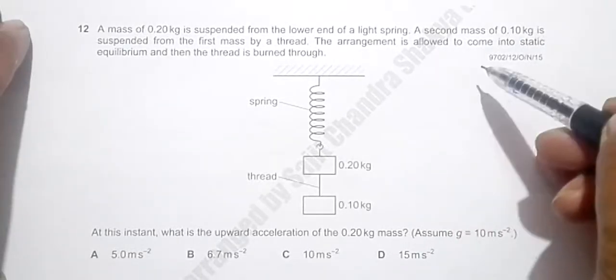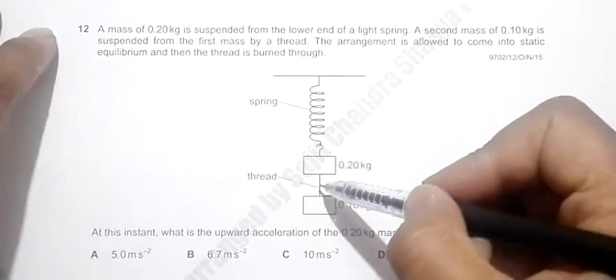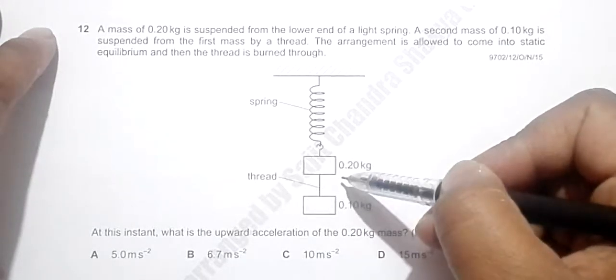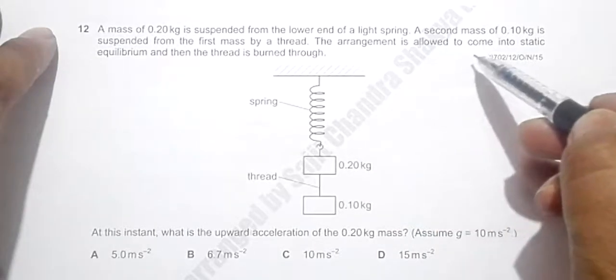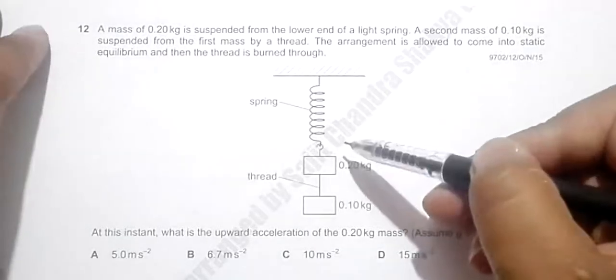So these two masses will be acting to extend the spring. The arrangement is allowed to come into static equilibrium, so it first oscillates a bit, then we allow them to come to rest.